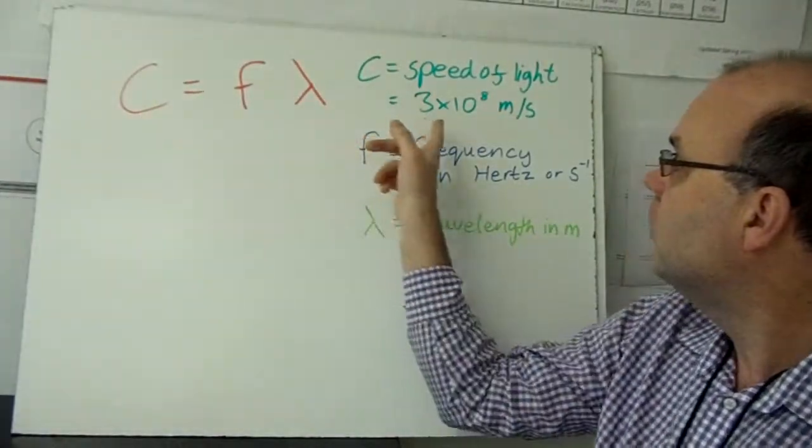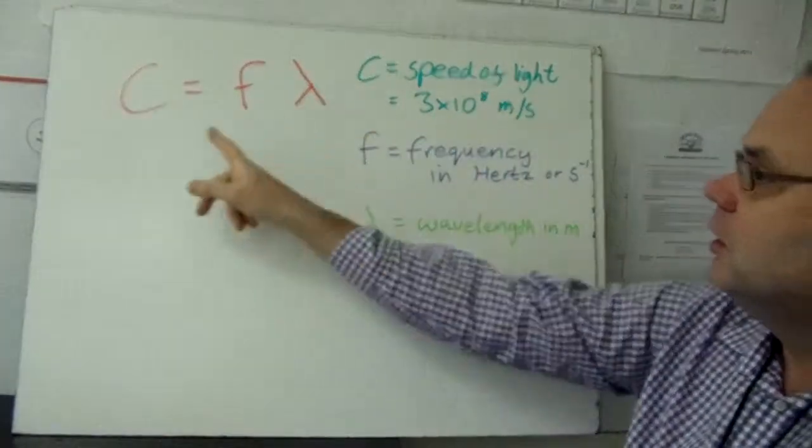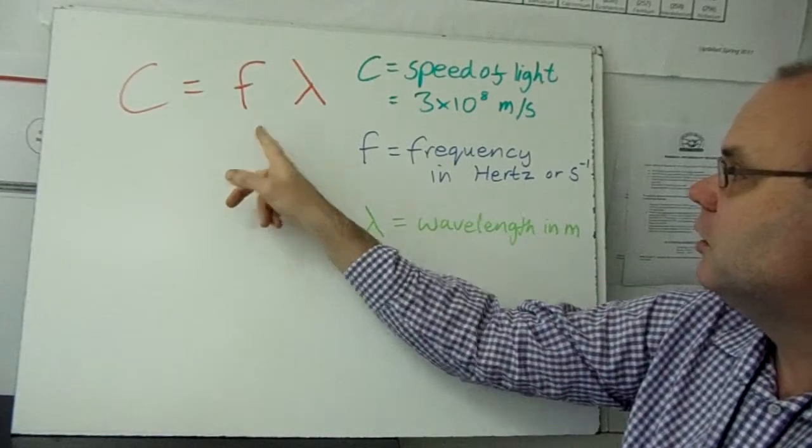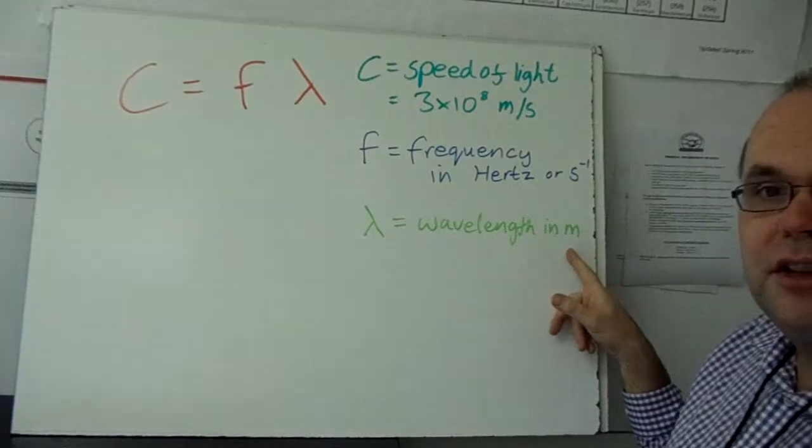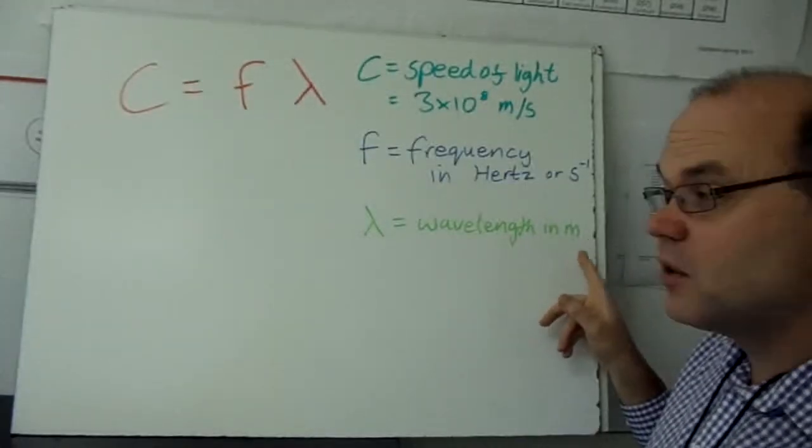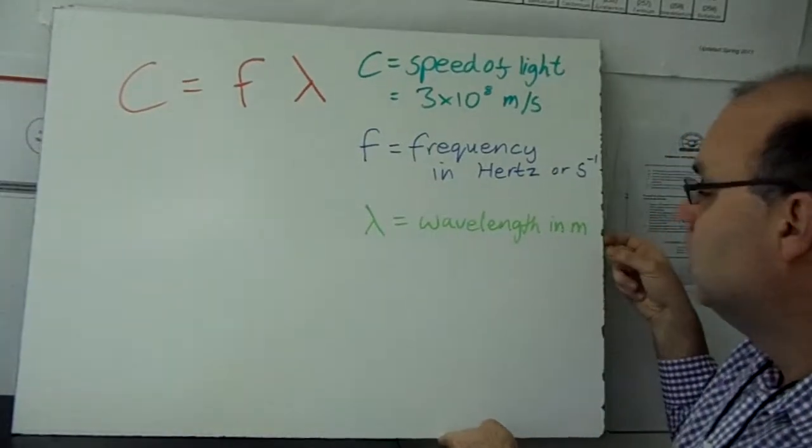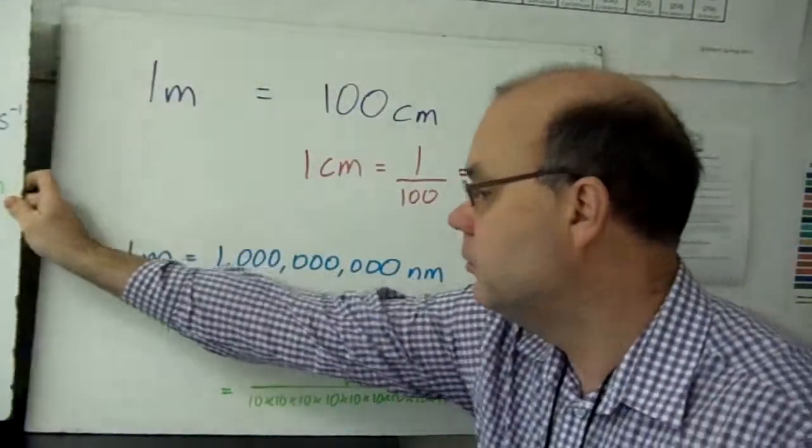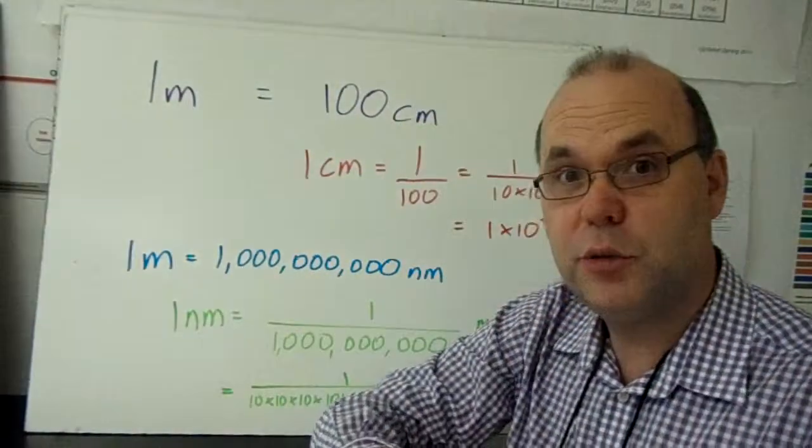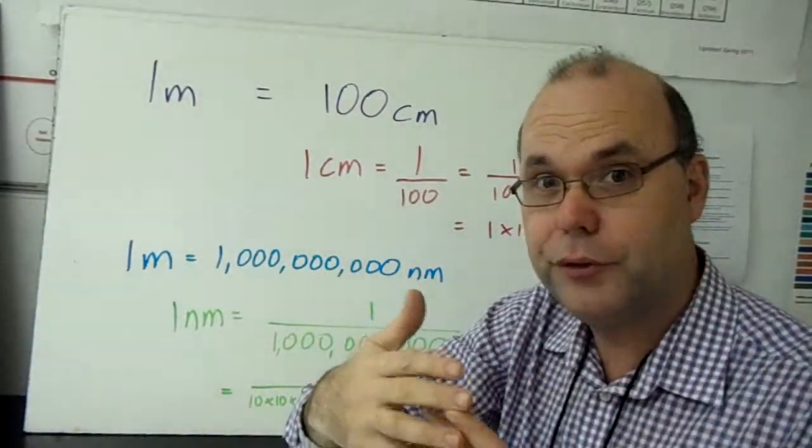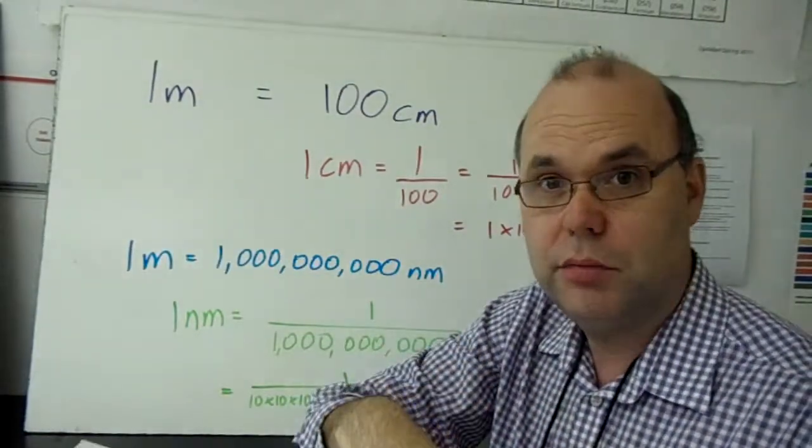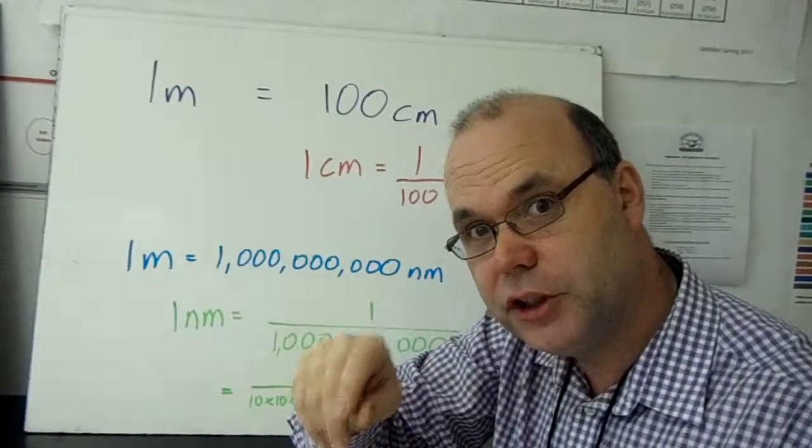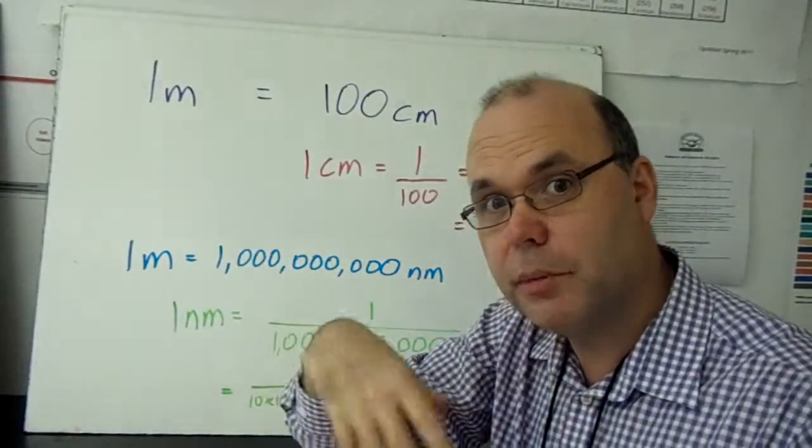And this is a useful piece of math to help you convert frequencies into wavelengths. It's simply the speed of light, 3 times 10 to the 8, equals the frequency times the wavelength, as long as the wavelength's in meters. And that's really important.